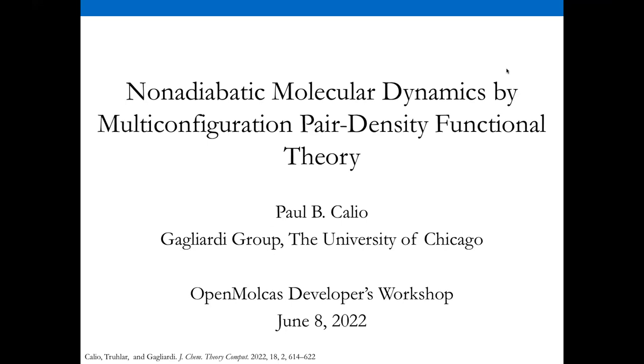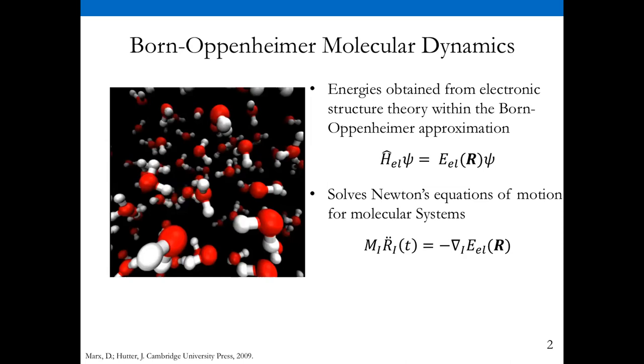To begin, within molecular dynamics it's very common to think of the Born-Oppenheimer approximation. This allows us to separate the nuclear and electronic degrees of freedom. For a given configuration, you can calculate the electronic energies for that structure. Once we have a structure and the energies, we can also generate nuclear forces and solve Newton's equations of motion to get time dependence of molecular structures.